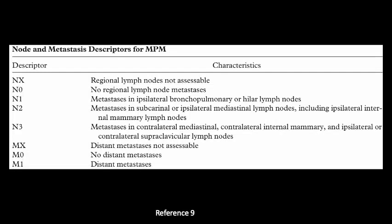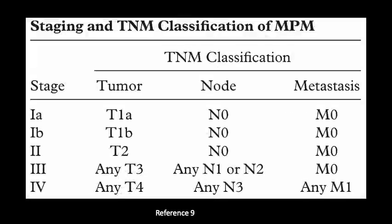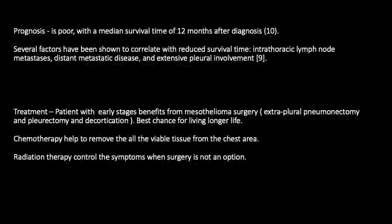There were no lymph nodes or distant metastases seen in our case; metastases were ruled out by PET-CT and no lymph nodes were found in the thoracic region. The prognosis is poor, with a median survival time of 12 months. Factors that reduce survival include metastases and extensive pleural involvement. Treatment is usually surgery depending on the stage, and chemotherapy and radiotherapy can also be given.